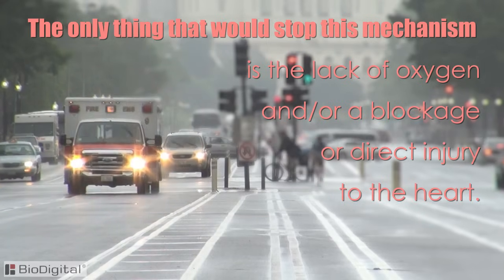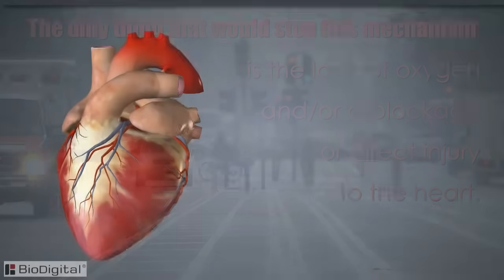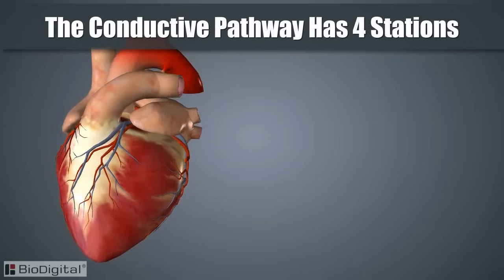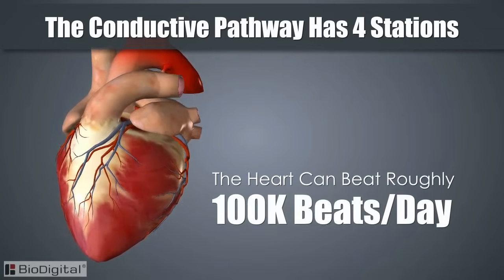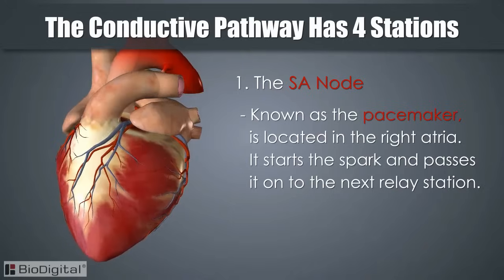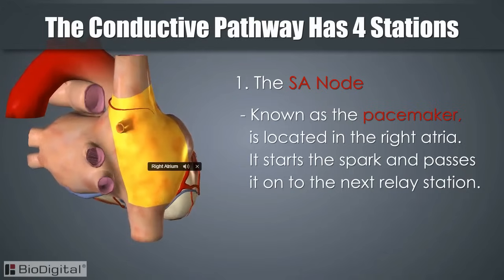The only things that would stop this mechanism are a lack of oxygen, a blockage, or direct injury to the heart. The conductive pathway within the heart has four main stations through which it sends electrical impulses, keeping the heart beating roughly one hundred thousand times a day. The first conductive pathway station is the SA node, known as the pacemaker, located in the right atria — it starts the spark and passes it on to the next relay station.